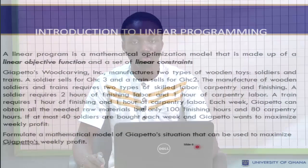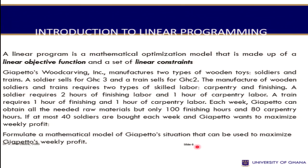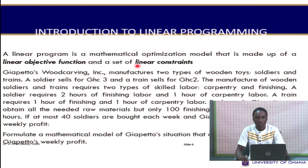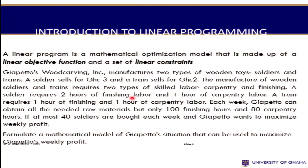Linear programming is an optimization model made up of two key things: an objective function, which is linear, and a set of constraints, which is also linear. For example, Giappetto Wood Carving Incorporated manufactures two types of wooden toys, soldiers and trains. A soldier sells for $3 and a train sells for $2. Manufacturing requires two types of skilled labor: carpentry and finishing.